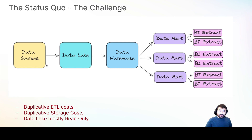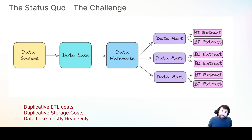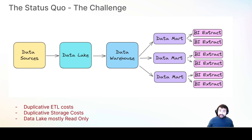Typically, what you would do is you would export the data from those data sources, transform it, and load it into a data lake, because the data lake allows you to dump not just structured data but unstructured data. So the data lake acts like this big dumping ground for all your data. And then you'd have a portion of that data that you want to use for BI dashboards and deeper analytics, so you move it to more of a full-on analytics platform in the form of a data warehouse — once again, export, transform, load that data into the data warehouse.